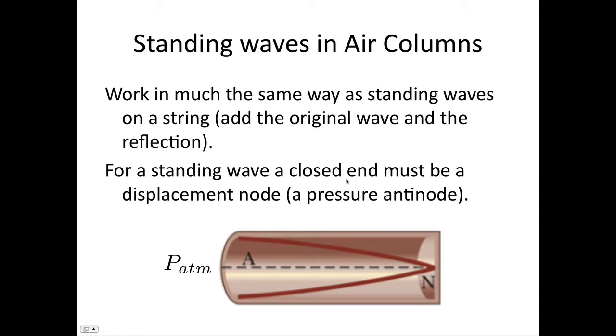For a standing wave, a closed end must be a displacement node. So if we have a displacement node here, we have a maximum pressure as well. It's a pressure antinode. That's because the particles here can't vibrate in and out because there's an end there stopping them vibrating.